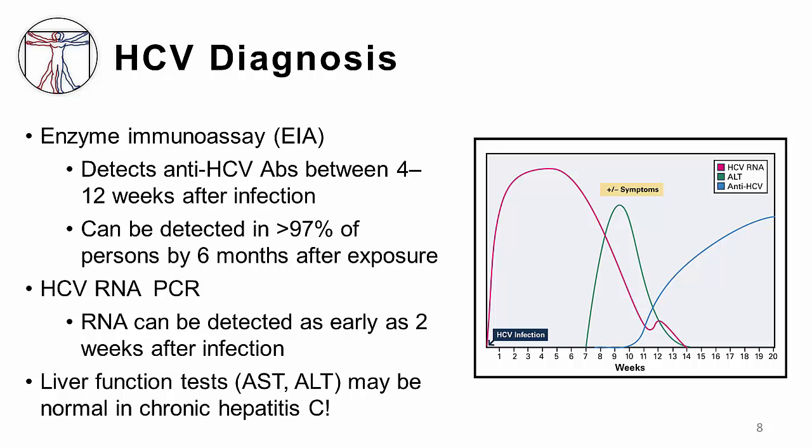Also remember that while liver function tests such as AST and ALT may be elevated in the acute setting, for patients with more chronic hepatitis C these tests may be completely normal.